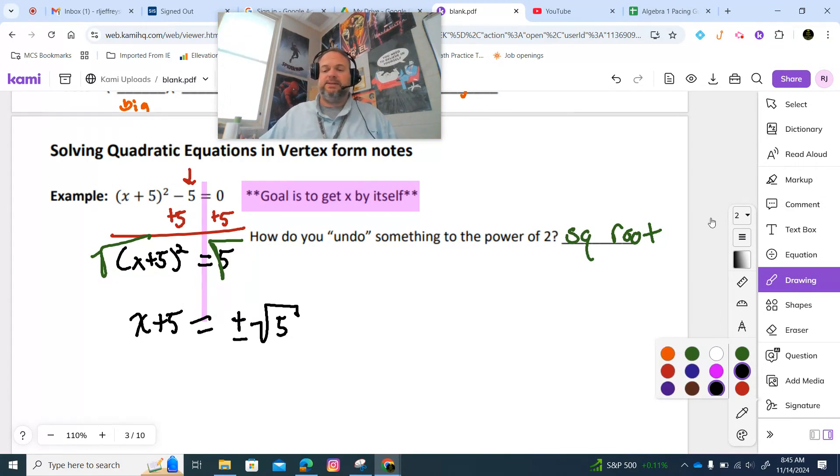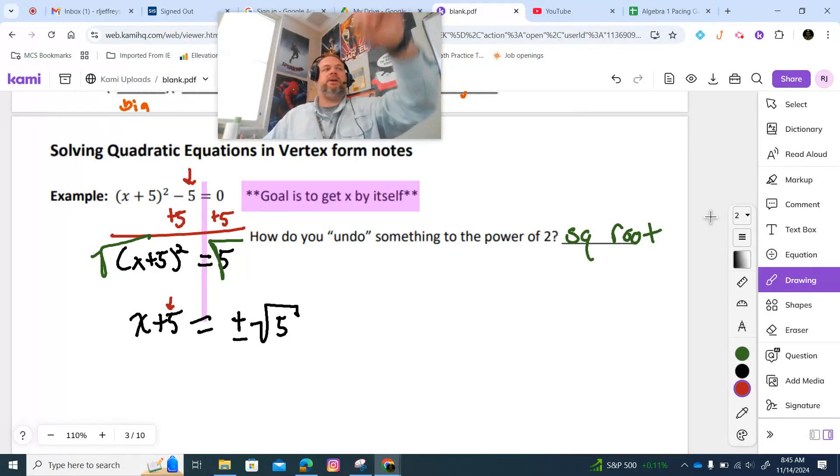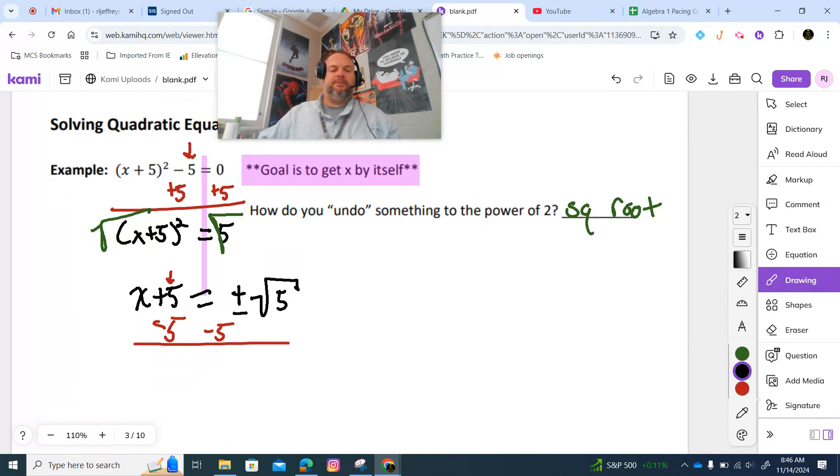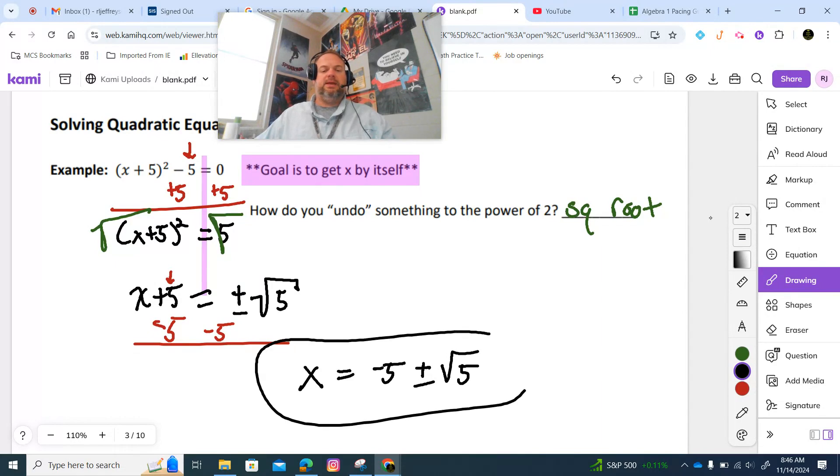Now all we need to do is to get this plus 5 over to the other side. So what do we do? How do we undo a plus 5? Minus, we subtract 5. So our answer is x equals negative 5 plus or minus the square root of 5. That's it. That's the answer.